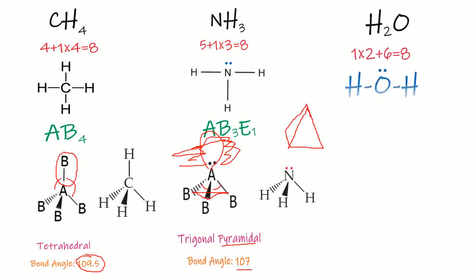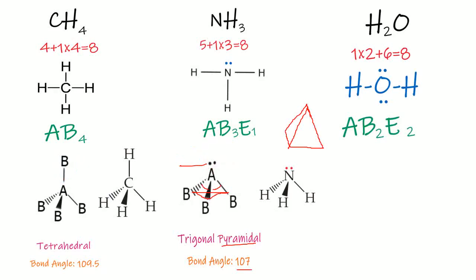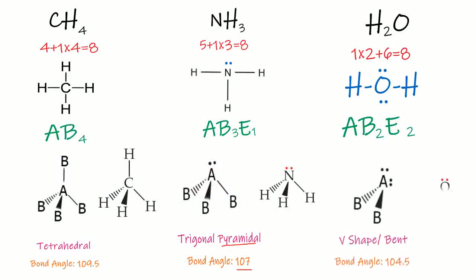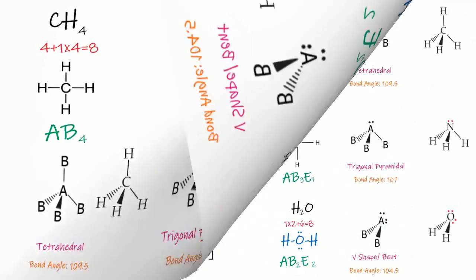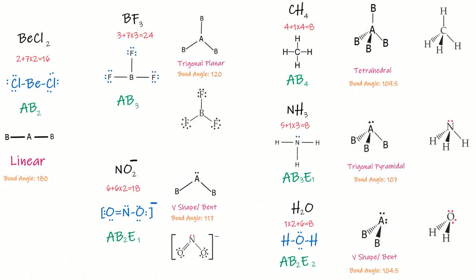Our next example is water, H₂O. Its type is AB₂E₂. Any molecule with AB₂E₂ type has a V-shape or bent geometry. Here are all examples together on one screen — you can see the types with their geometries and bond angles.